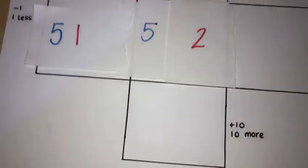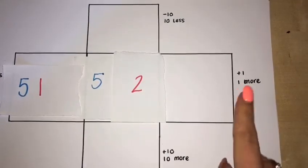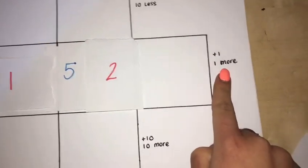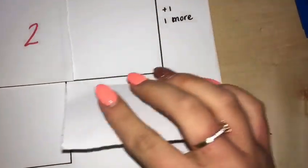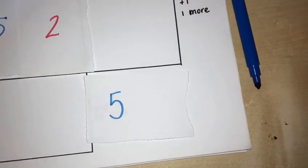The next thing we need to do is find one more than 52. Again, we know that the 50 will stay the same, and one more than 2 is 3.